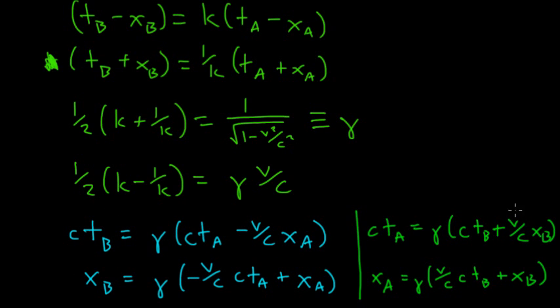One thing that we notice between these: these are converting from the coordinates of A to the coordinates of B, or converting from the coordinates of B back to the coordinates of A. Comparing these two equations, the only difference is that the velocity is changed to a minus. Here where we have negative velocity, we go to plus velocity. That makes sense.